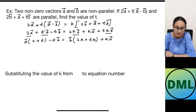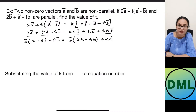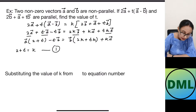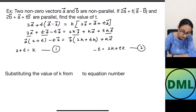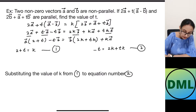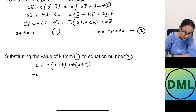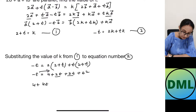Taking vector a common on the left gives coefficient (2 + t), and vector b common on the right gives coefficient (2k + tk). Equating vector a components: 2 + t = k — equation 1. Equating vector b components: −t = 2k + tk — equation 2. Substituting k = 2 + t from equation 1 into equation 2: −t = 2(2 + t) + t(2 + t). Expanding: −t = 4 + 2t + 2t + t².